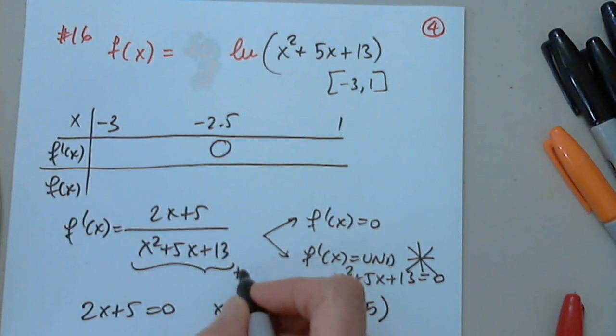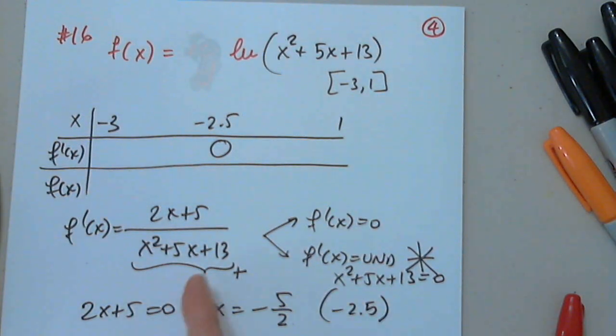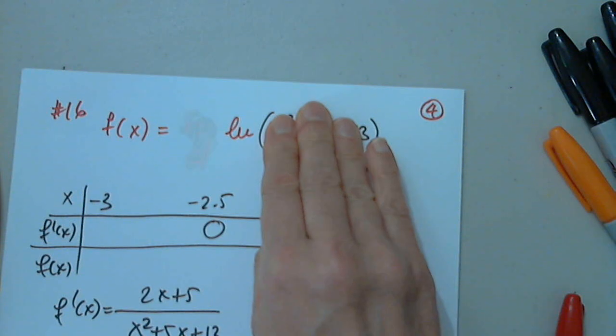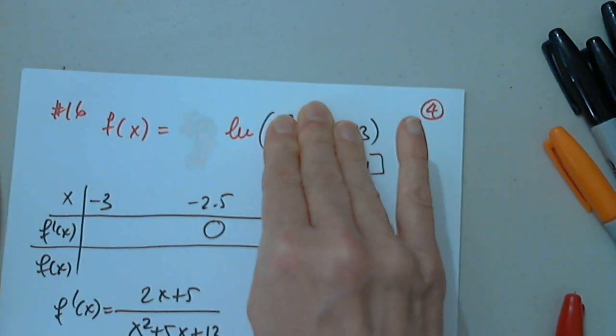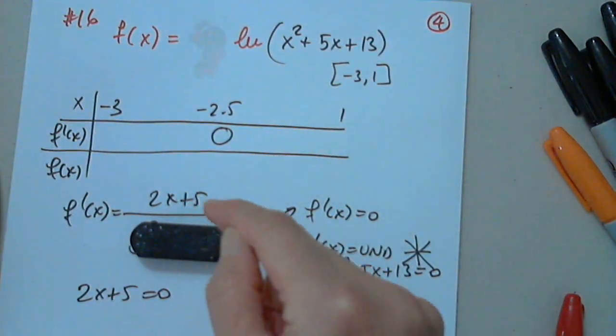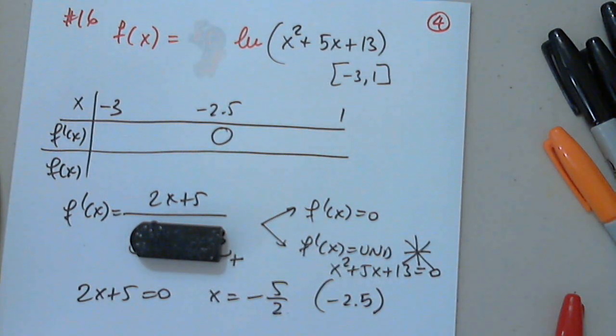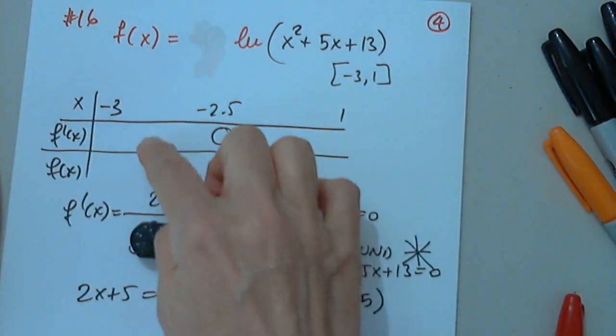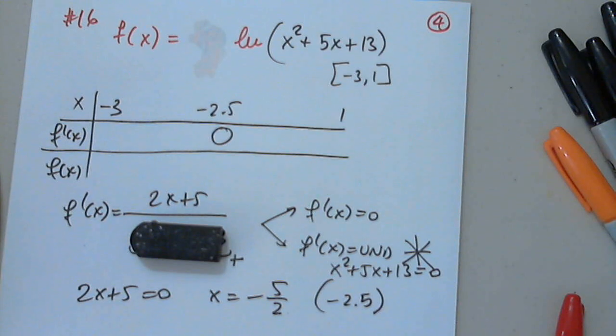This has to be a positive number. No doubt. Because remember, natural log cannot be applied to negative numbers or 0. So this has to be positive. So when I determine the sign of this, I only determine the sign of the numerator. So before it's 0, what is the sign? And after it's 0, what is the sign?